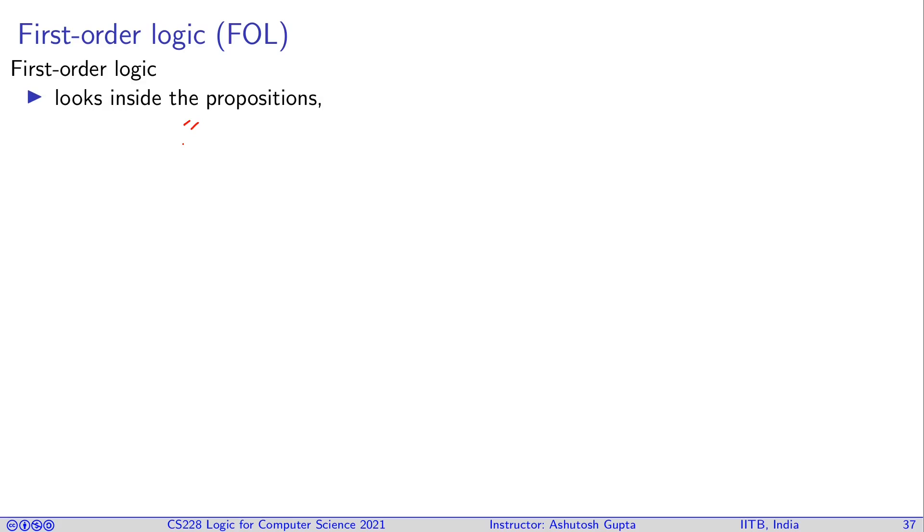You need to sometimes look inside the proposition to make the argument, and we'll see examples. It deals with parameterized propositions. The propositions are not a black box. They have parameters, and for some parameter values the proposition is true, for some it is not.